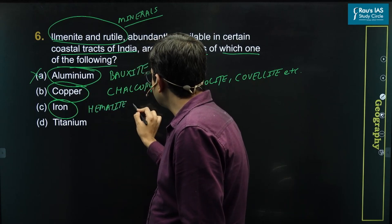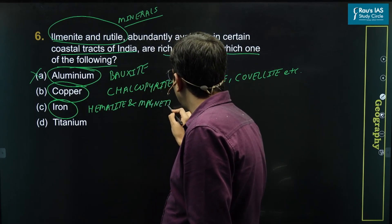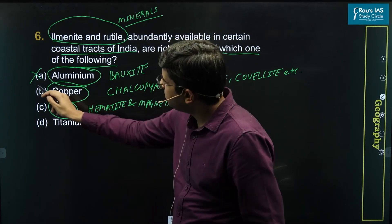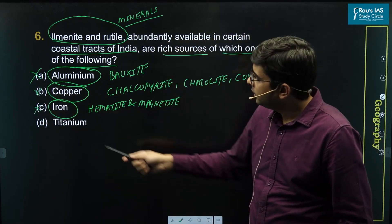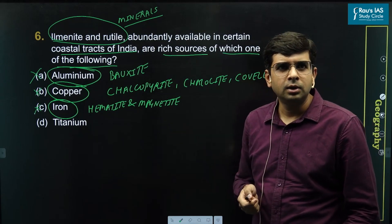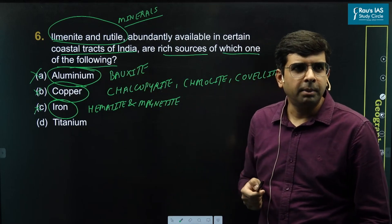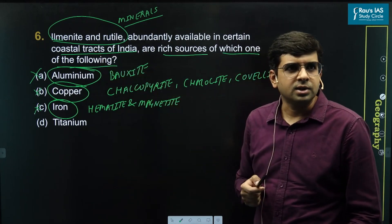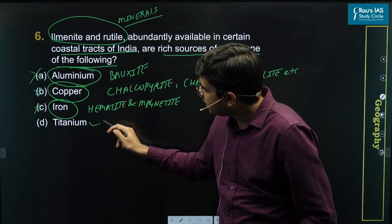and also magnetite. Consequently we can eliminate both options B and C because iron is present abundantly in hematite and magnetite. Though some percentage of iron is present in ilmenite, it is not the abundant source of iron. So using this elimination technique we can come to the right answer,